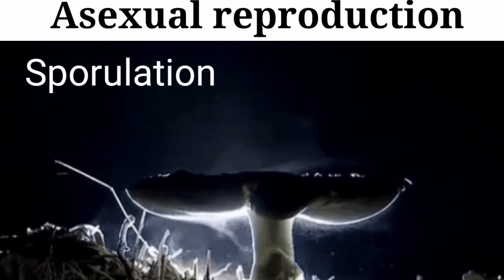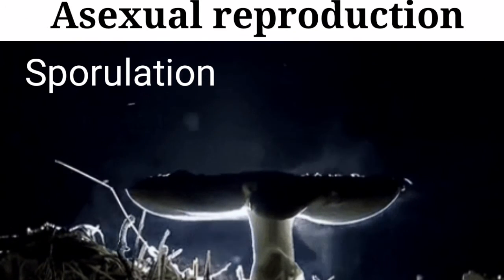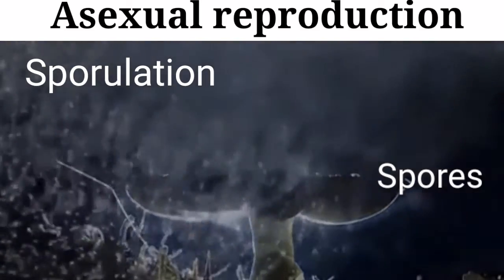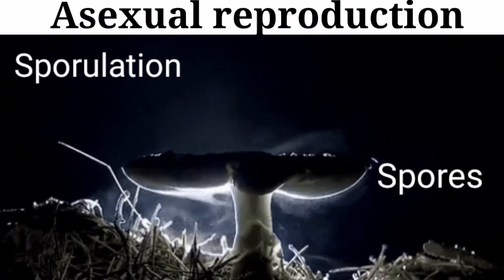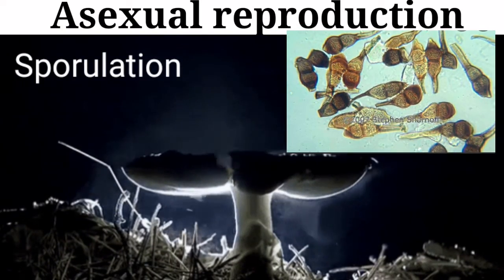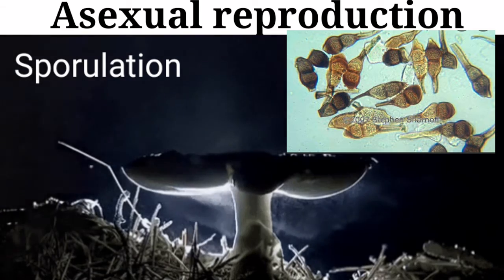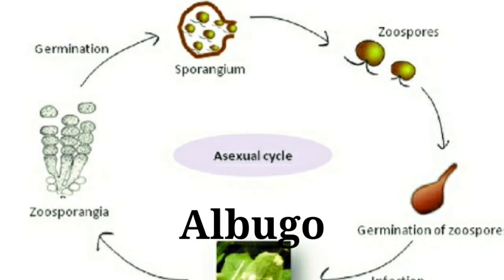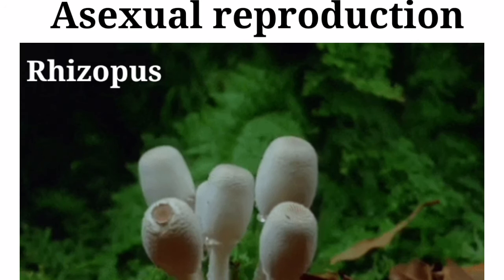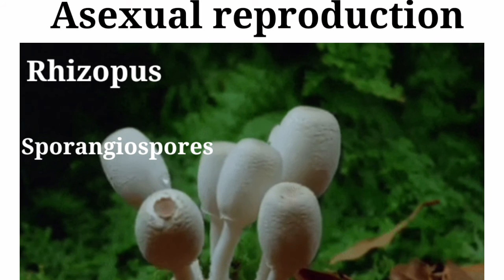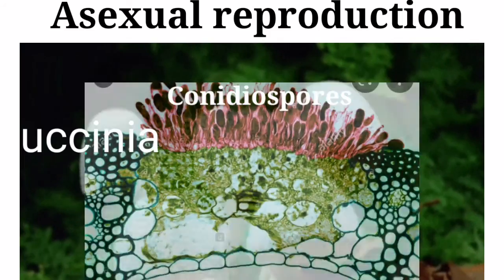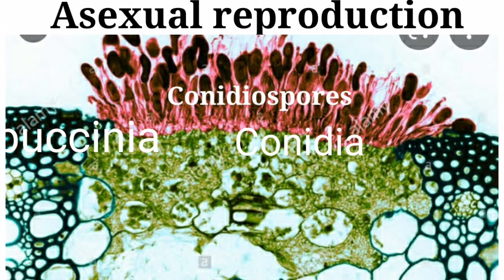Next we have sporulation. The members of the kingdom fungi and algae reproduce through special asexual reproductive structures called spores, which are flagellated, motile, naked, protoplasmic bodies. Some spores are zoospores produced within zoosporangia — example albugo — sporangiospores produced within sporangia — example rhizopus — and conidiospores produced within conidia.